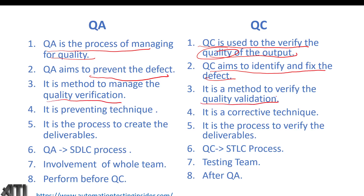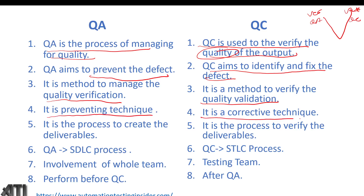QA is a method to manage quality — it is verification. QC is a method to verify quality — it is validation, as discussed in the last video. The left side of the V-model is called verification and the right side is validation. So the left side is quality assurance and the right side is quality control. QA is a preventive technique that prevents defects, while QC is a corrective technique.